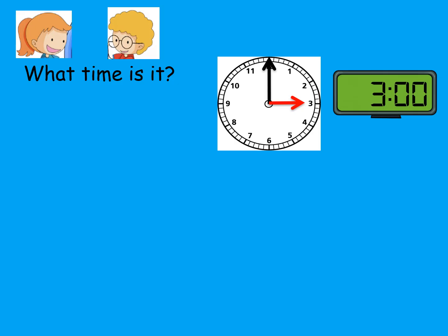Jenny and Andy are talking about what they've learned about time. Jenny says, 'What time is it, Andy?' Andy says, 'It's easy, Jenny. Can you see the short hand on the clock? It points to 3, and the long hand points to 12. It's 3 o'clock.'